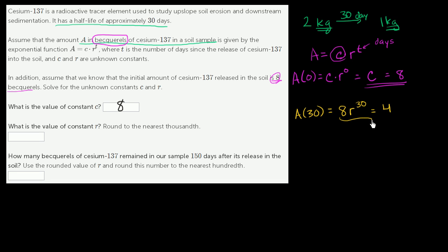Now we can use this to solve for R. So you have 8 times R to the 30th power is equal to 4. Divide both sides by 8, you get R to the 30th power is equal to 4 over 8, which is the same thing as 1 half. Then we can take the 1 30th, we can raise both sides to the 1 30th power. R is equal to 1 half to the 1 30th power.